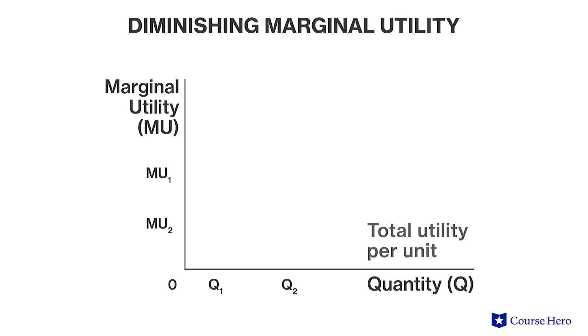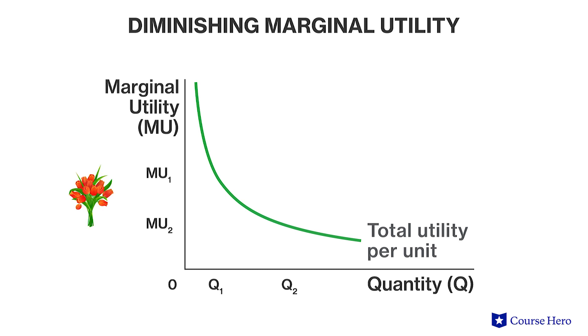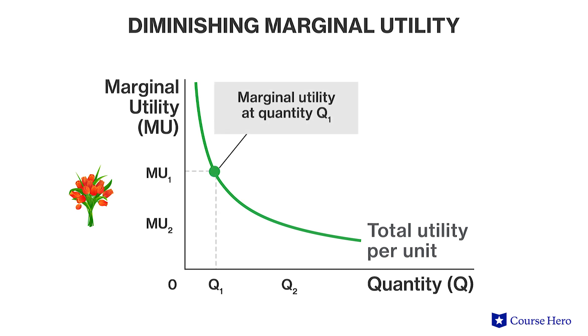Consumer behavior changes based on diminishing marginal utility and will thus impact the number of products sold. If we wanted to look at marginal utility graphically, we would represent it by a downward sloping marginal utility curve. When my mother receives the first bouquet of flowers, it provides a high level of initial utility.